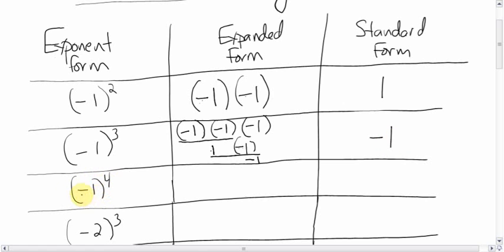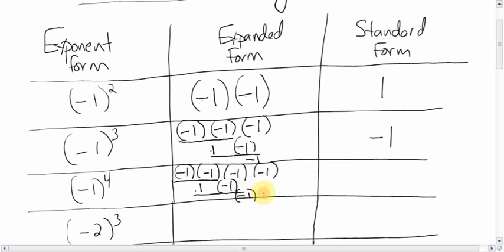Now, this one: negative 1 to the power 4. It's going to be 1 — we just don't know if it's positive or negative. Write it out: negative 1 times negative 1 times negative 1 times negative 1. That times that is 1, bring down negative 1, negative 1 times negative 1 is positive 1. So it's positive 1. With even exponents, the two negatives cancel in pairs, leaving a positive. With an odd exponent, there's an extra negative left over, making the answer negative.